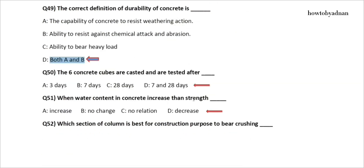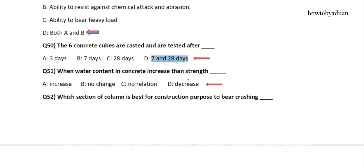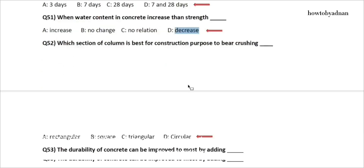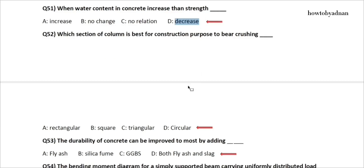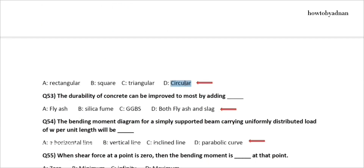Question 50: The six concrete cubes are cast and tested after? The answer is option D: 7 and 28 days. Question 51: When water content in concrete increases, then strength? The answer is option D: Decreases. Question 52: Which section of a column is best for construction purpose to bear crushing? The answer is option D: Circular. Question 53: The durability of concrete can be improved most by adding? The answer is option D: Both fly ash and slag.